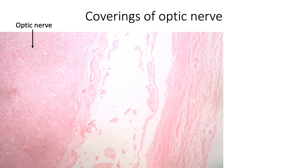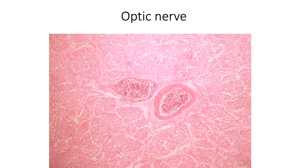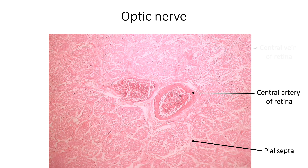Therefore, unlike the other peripheral nerves, the optic nerve is covered by the same three layers of meninges as the central nervous system — from outside inward: the dura mater, arachnoid mater, and pia mater. Although the classic arrangement of fascicles surrounded by a sheath of perineurium is absent in the optic nerve, the pia sends in septa that divide the myelinated nerve fibers into multiple bundles. The characteristic feature of the optic nerve is the presence of the central artery of the retina and central vein of the retina at the center of the nerve.